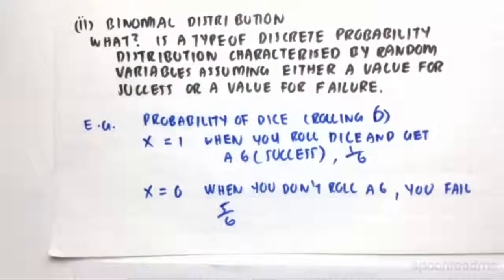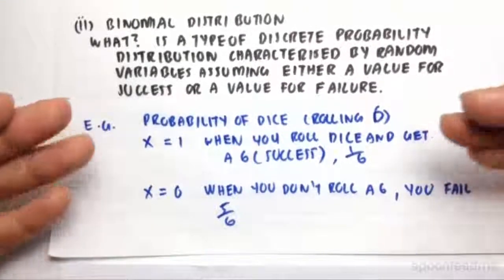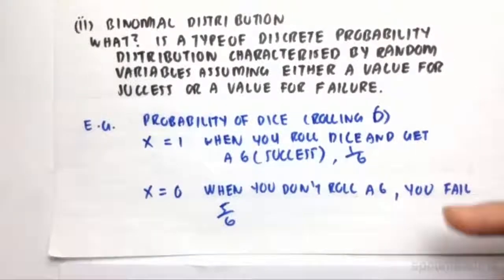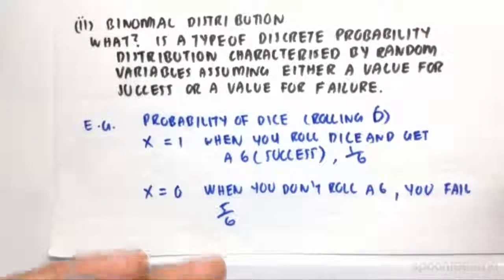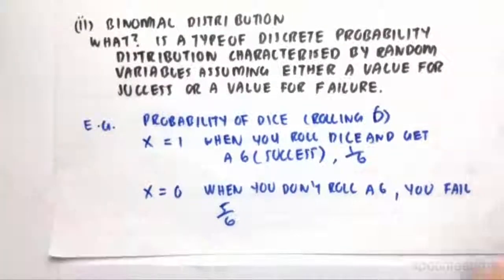When we're using a binomial distribution, to sum it all up, we can only have a random variable equal to success or failure. If it's success, we normally give it a value of 1. And if it's failure, we give it a 0.